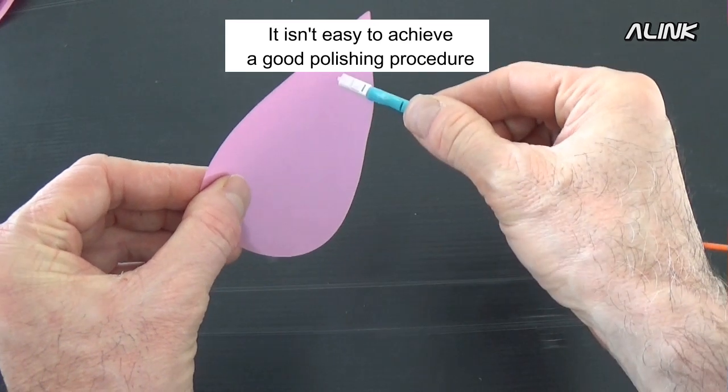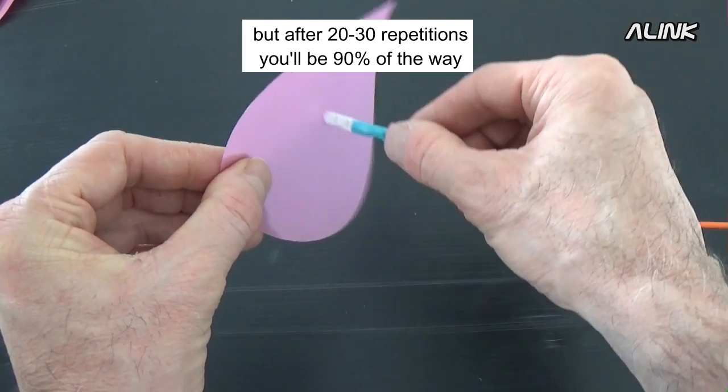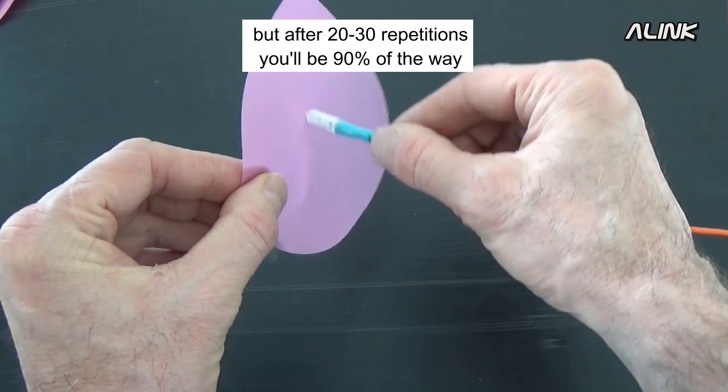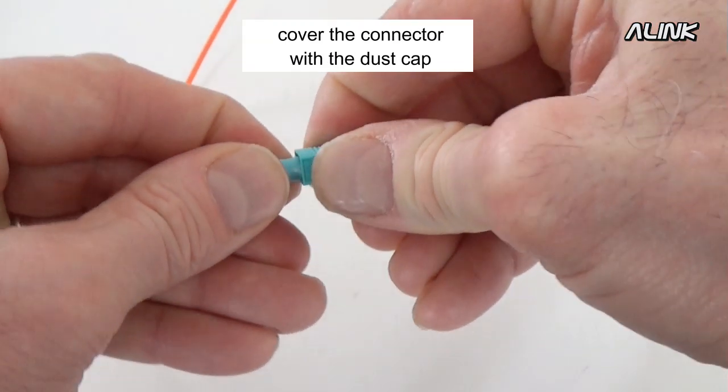It isn't easy to achieve a good polished procedure, but after 20-30 repetitions, you'll be 90% of the way. At the end of the inspection, cover the connector with the dust cap.